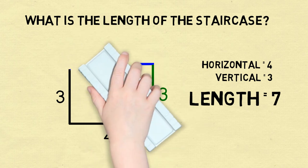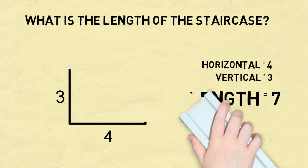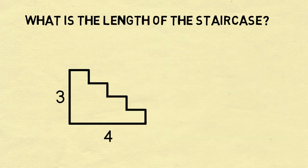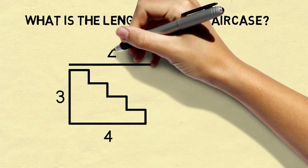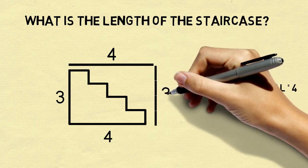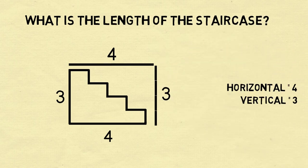Now let's redraw the staircase. Instead of having two steps, we'll draw it as having four steps. What's the length of the staircase now? Once again, we can look at the horizontal distance of the steps and the vertical distance of the steps and see that the length of the staircase is still 7.